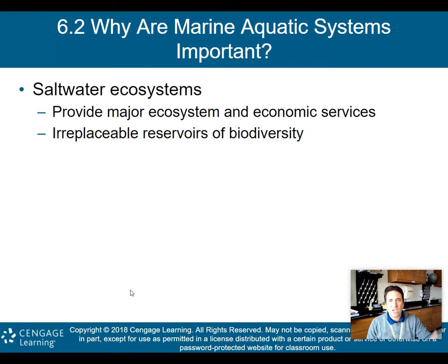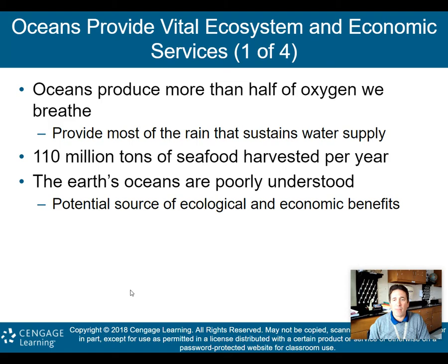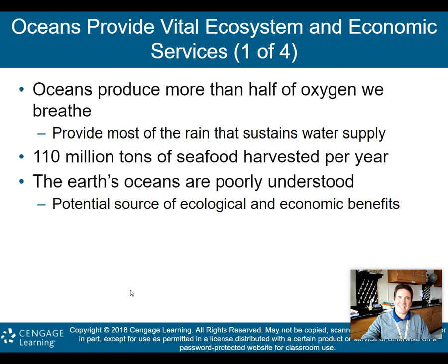Why are marine aquatic systems important? Saltwater ecosystems provide major ecosystem and economic services and are irreplaceable reservoirs for biodiversity. Oceans produce more than half of the oxygen we breathe and provide most of the rain that sustains our water supply through evaporation. About 110 million tons of seafood are harvested per year. Unfortunately, Earth's oceans are poorly understood and could be a potential source for even more ecological and economic benefits.